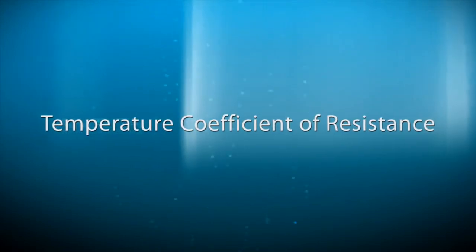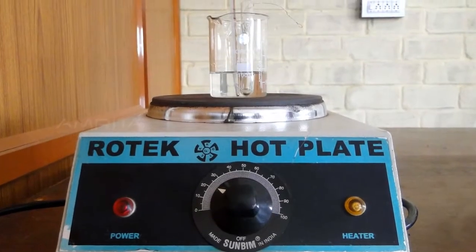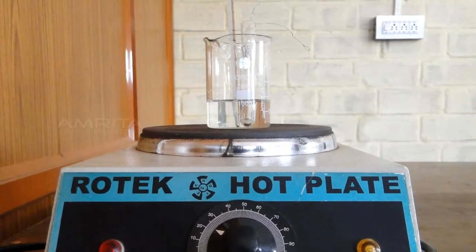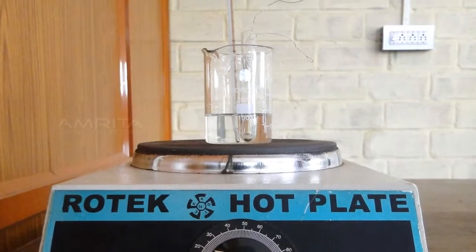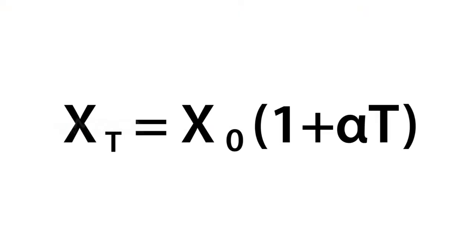Temperature coefficient of resistance. The aim of the experiment is to determine the resistance of a given resistor at different temperatures, and hence to find the temperature coefficient of resistance using the relation Xt = X0(1 + αt).